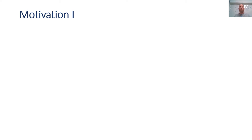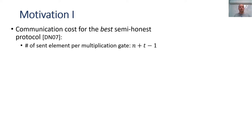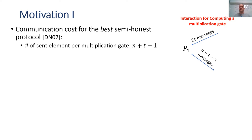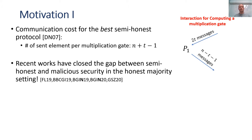To see this, consider evaluating an arithmetic circuit over secret-shared inputs. If the secret sharing is linear, parties need only interact to compute multiplication gates. The best semi-honest multiplication protocol to date is the Damgård-Nielsen protocol, which has two rounds: in the first round parties send 2t messages to party P1, and then P1 sends back n minus t minus 1 messages, giving a communication cost of n plus t minus 1 field elements per multiplication gate. Recent works have also closed the gap between semi-honest and malicious security in this setting.